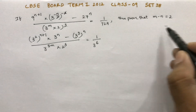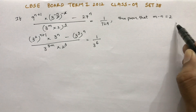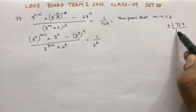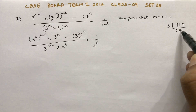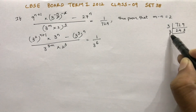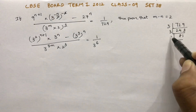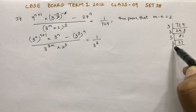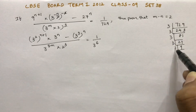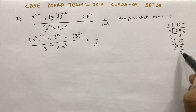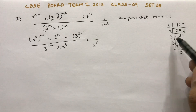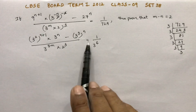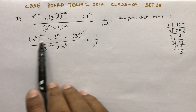Now see, if you do the prime factors for 729: 3 times 243, 3 times 81, 3 times 27, 3 times 9, 3 times 3 — so 729 is 3 to the power 6. So all the values are now written in terms of 3.